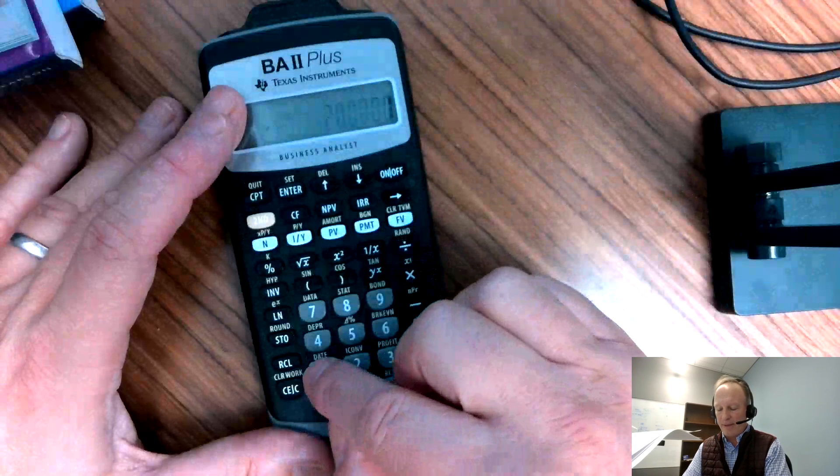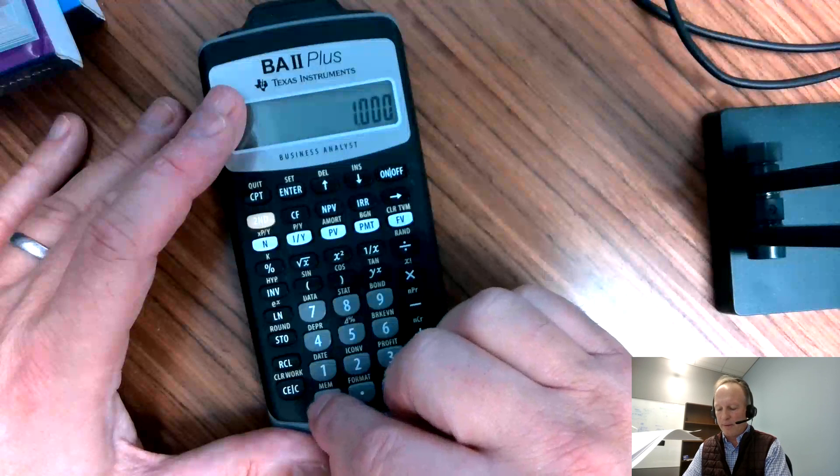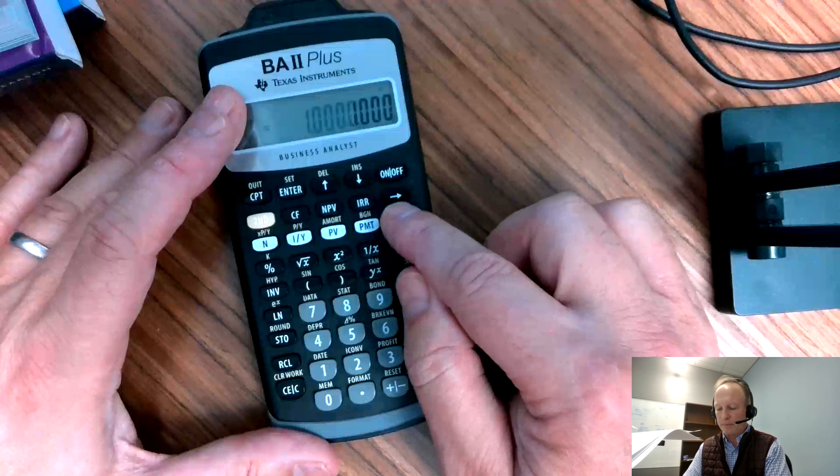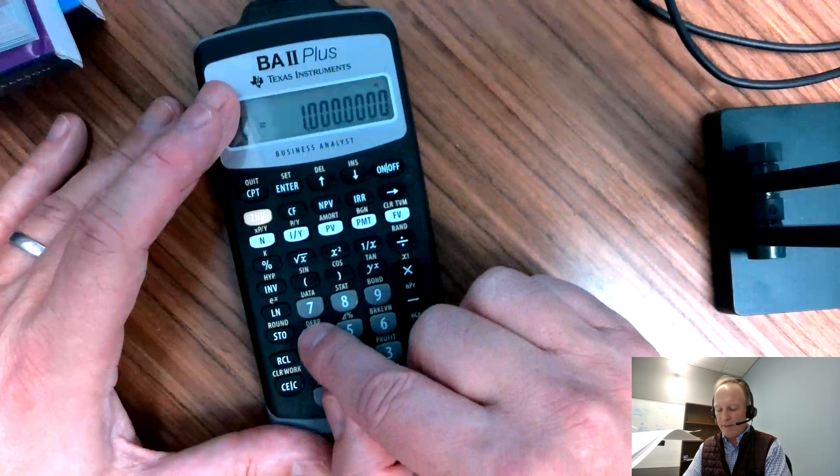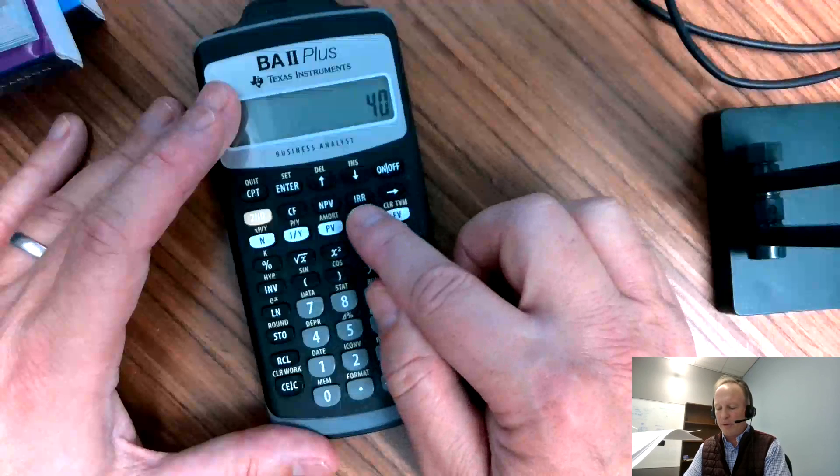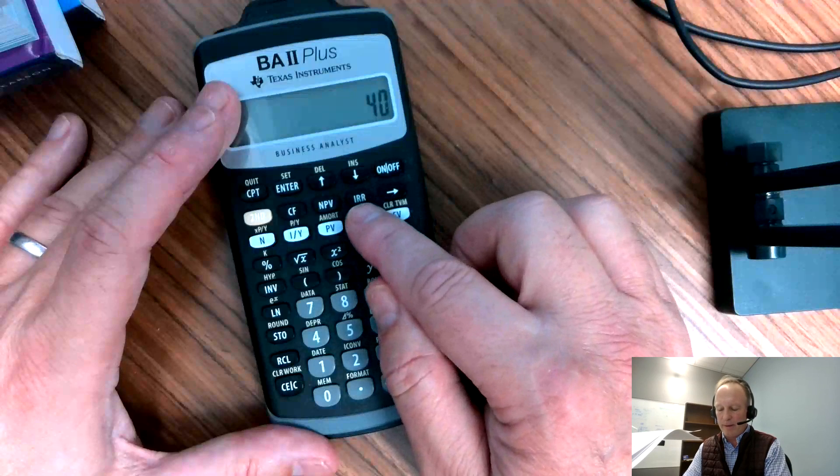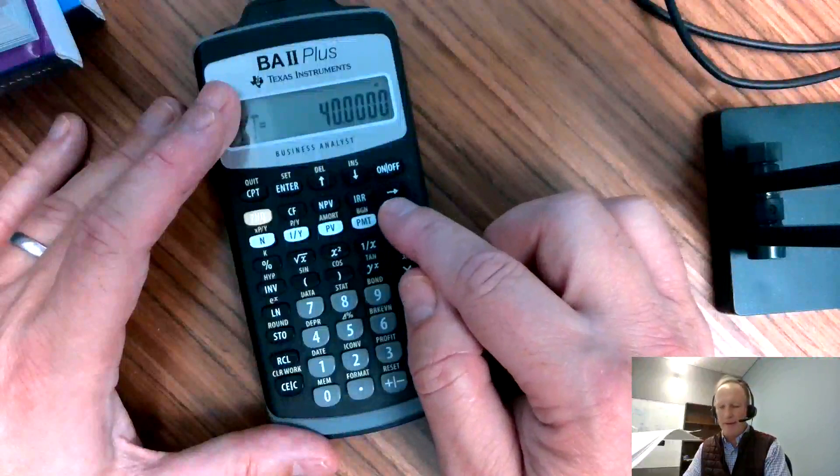Let's do the future value next, $1,000. Future value. Payment. All right, so we put in 40. Payment. Notice I always put the number in first before I punch the time value button.